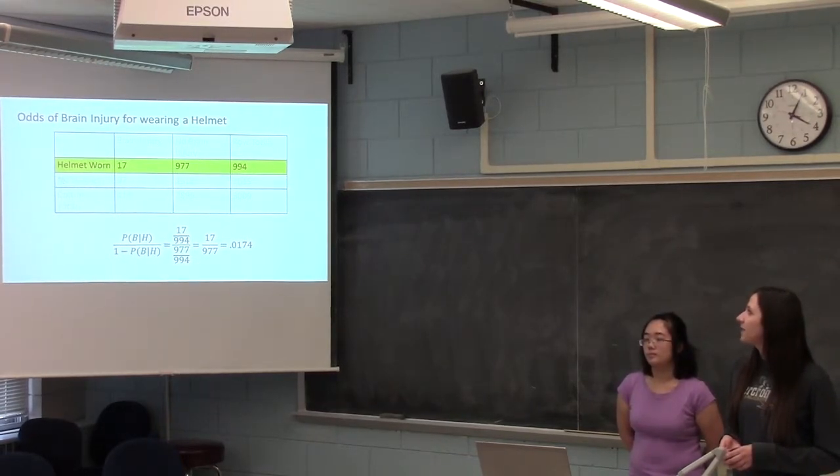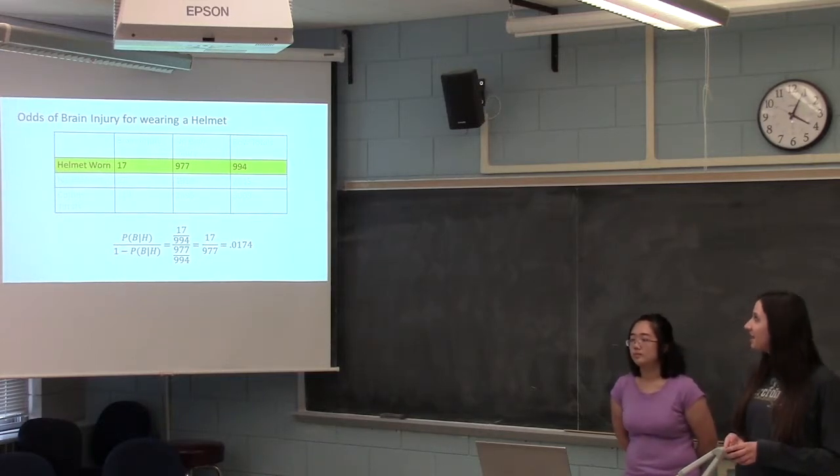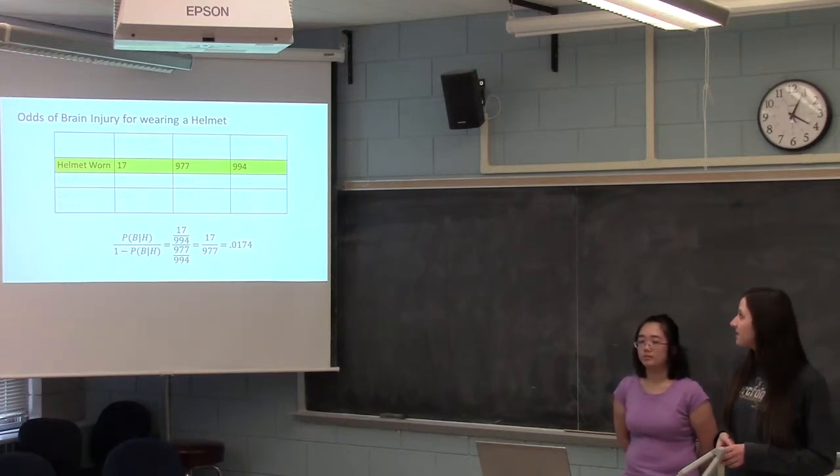So first we're going to take the brain injury, which is 17, and divide it by the total number of accidents of people wearing helmets, which is 994, and we end up with 0.0174.